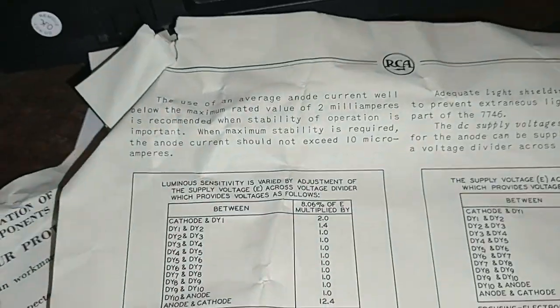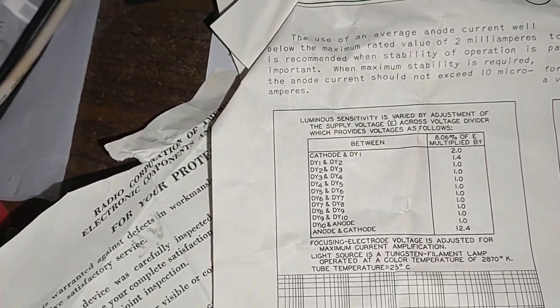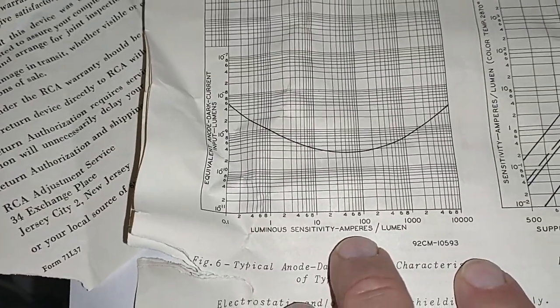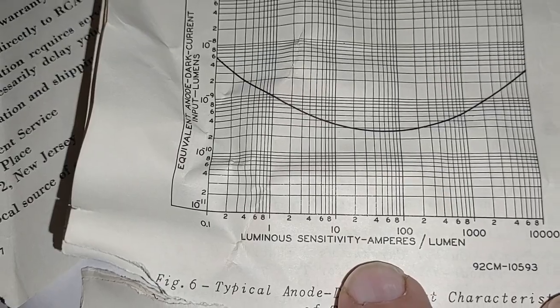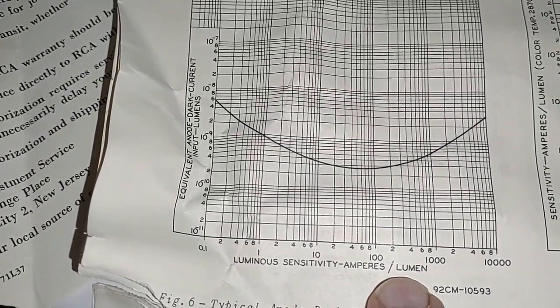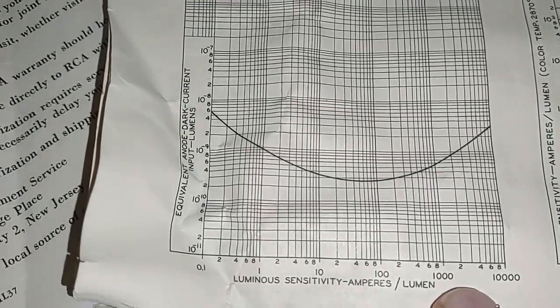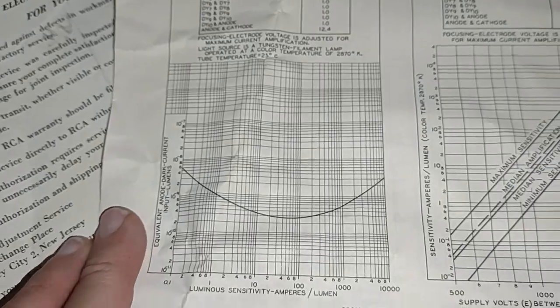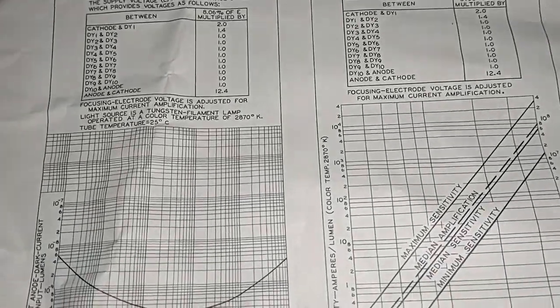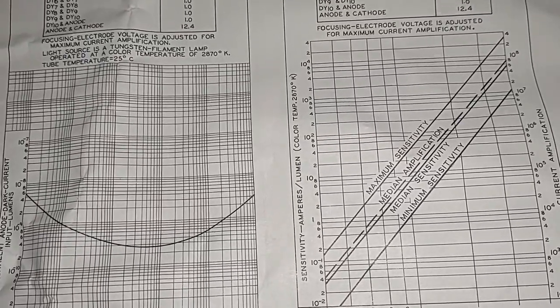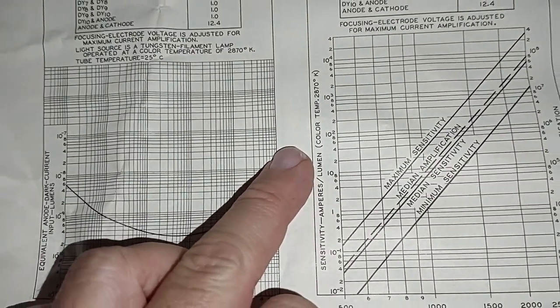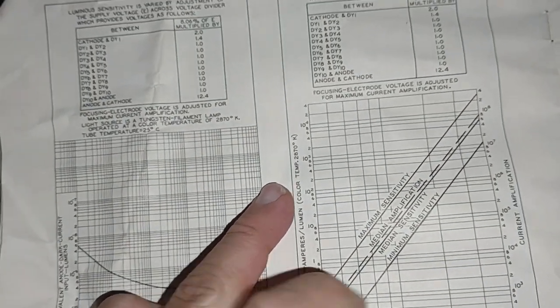Use an average anode current. Talks about the percent amplification between each of the dynodes. Luminous sensitivity in amps per lumen. So this must be in amps because they're saying amperes, an equivalent anode dark current input. So I guess it's a dark current plot, and the plot right beside it is supply volts between anode and cathode. Supply volts between anode and cathode and the sensitivity per lumen, it depends on the color and temperature. So there's that plot.